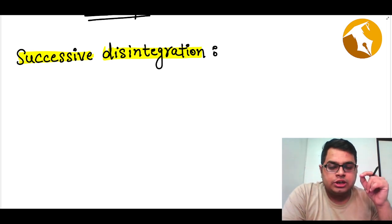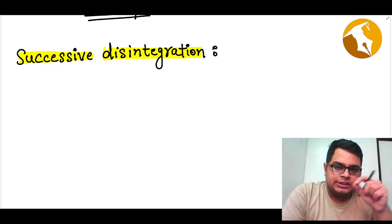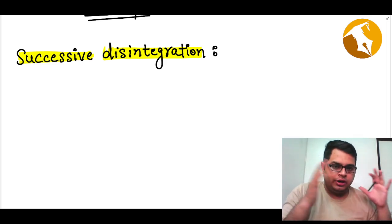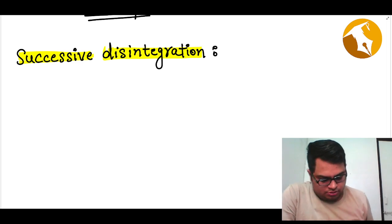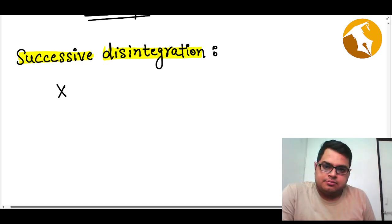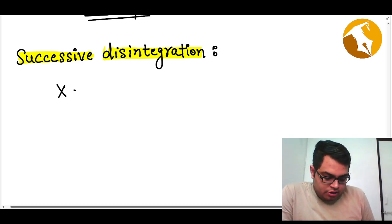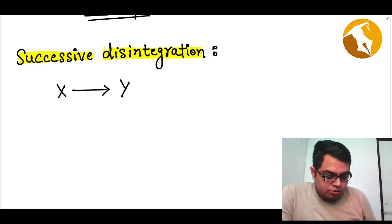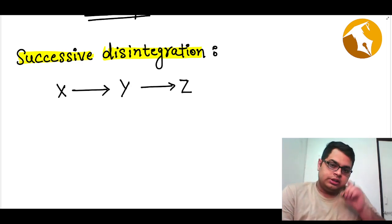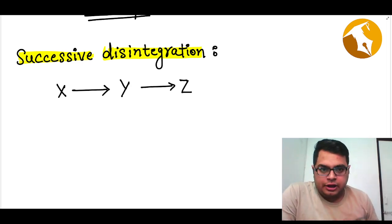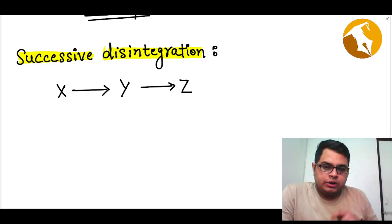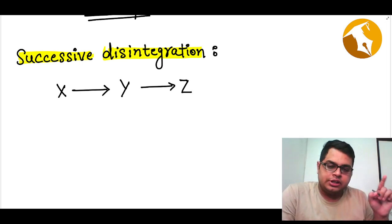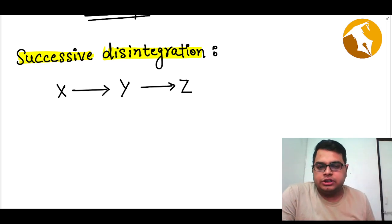In this lecture I am going to touch a very particular topic which is successive disintegration. What happens here is: let's say you have a nucleus X, and this nucleus decays into Y, and that nucleus also decays into Z. This can go on in multiple steps, but here we are going to study three. So X disintegrates into Y and Y disintegrates into Z.